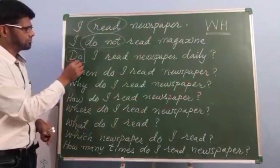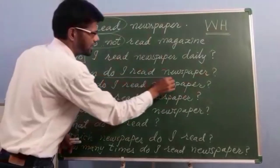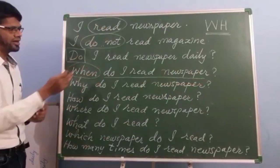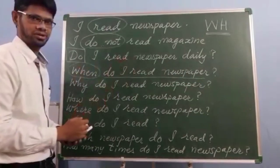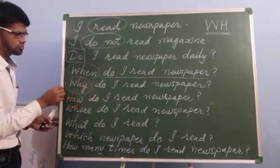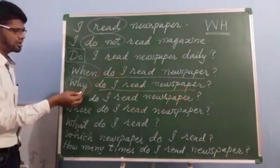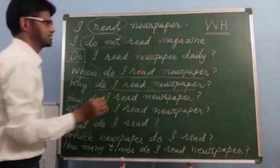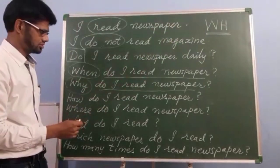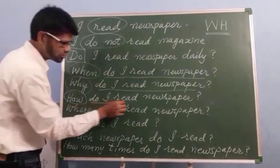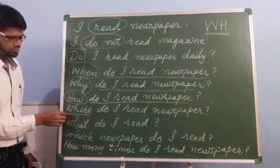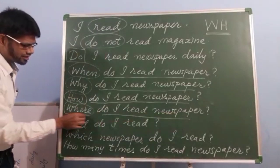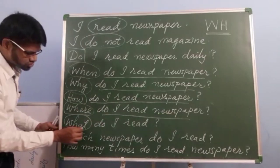For WH questions, we take the base question 'Do I read newspaper daily?' and add one or two WH words before it. For example: When do I read newspaper? Why do I read newspaper? How do I read newspaper? Where do I read newspaper? What do I read? Which newspaper do I read? Which color do I like? Which sport do I play?